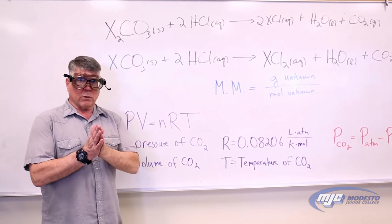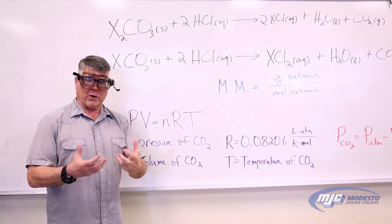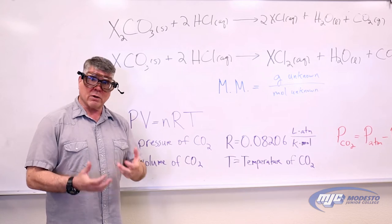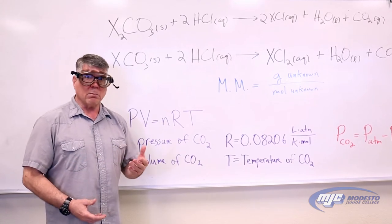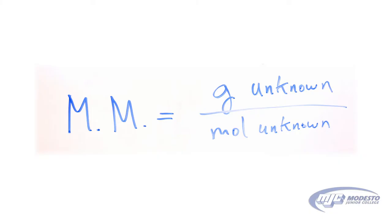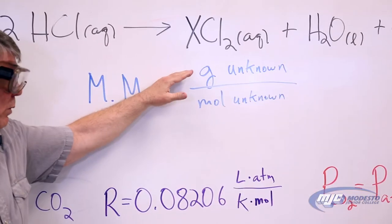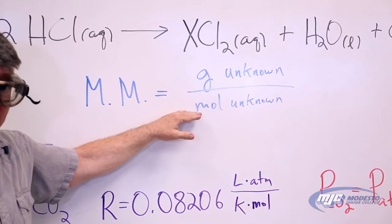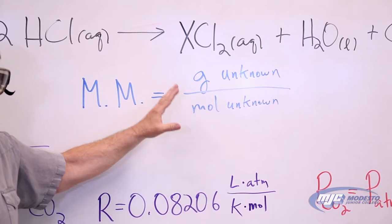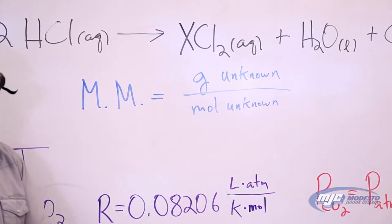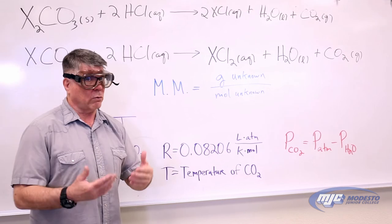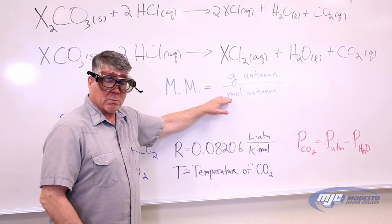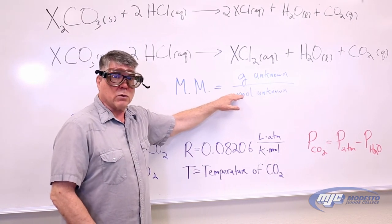So your goal is to determine, to figure out what the molar mass of your unknown is. The molar mass is grams over moles. You want to know how many grams of your unknown you have and how many moles of your unknown you have. The grams is easy — we're going to weigh it. The rest of this whole experiment is figuring out how many moles of your unknown carbonate you weighed out.